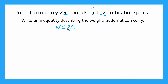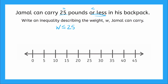Let's go ahead and plot our inequality. We have our number line here. We'll find 25 right here and draw my circle. Is 25 included in my solution set? Do I fill in this circle? I do, because we have an or equal to, so 25 is included. I represent that by filling in my circle with a dot. Now my arrow goes toward zero, including 25 and everything less than 25, because that's what Jamal can carry in his backpack.